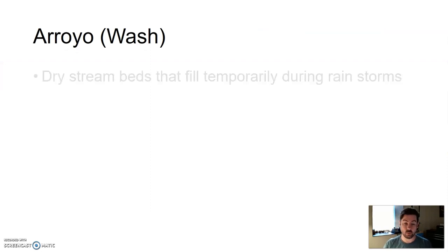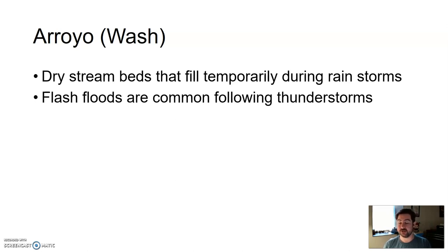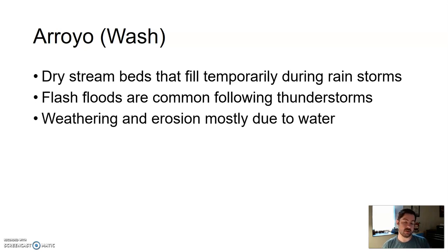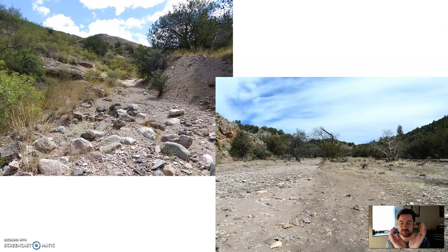Arroyos, what we know as washes — these are dry stream beds that fill temporarily during rainstorms. We have plenty of them around the Phoenix area. Flash floods are common in desert regions following intense thunderstorms. That water has to go somewhere. Our ground is so dry and compact that water can't really soak in quickly, so water that hits the desert surface finds the lowest point and gets into these washes, flowing and creating flash floods. Weathering and erosion of these features is mostly due to water. Washes vary in width depending on the area and topography.